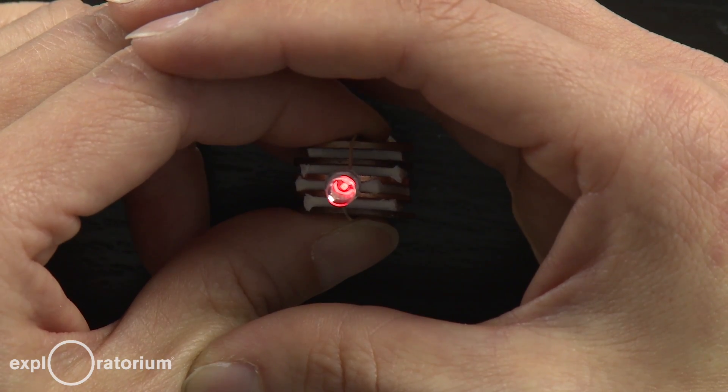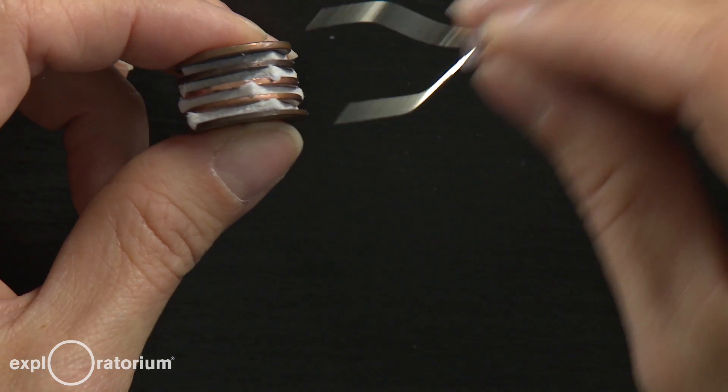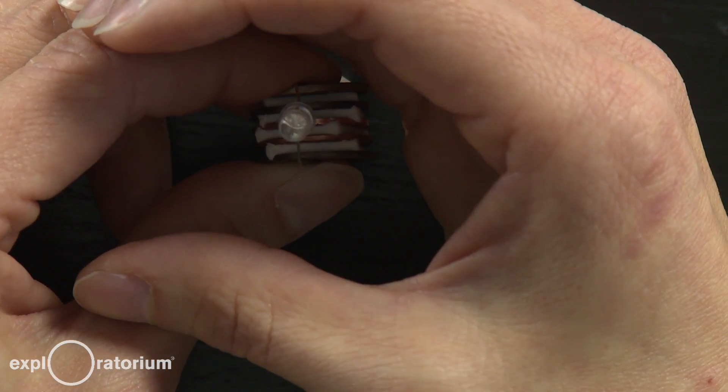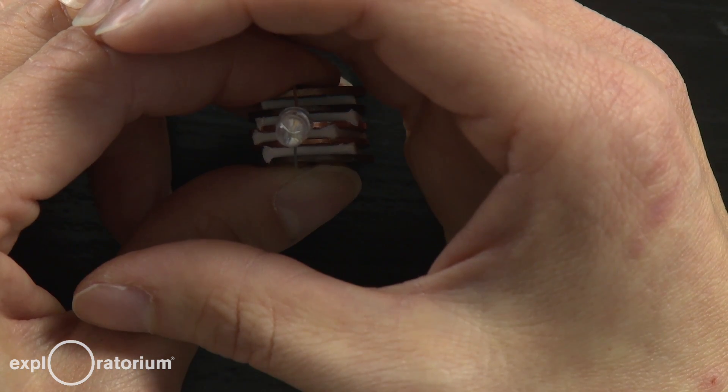My penny battery is powerful enough to light a red LED. But I have a blue LED here. And when I attach it, it doesn't light up. Can you design a penny battery that's powerful enough to light a blue LED?